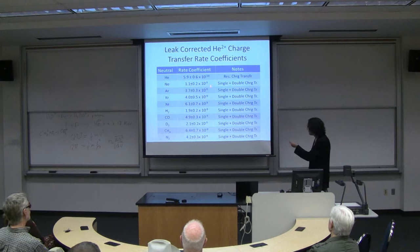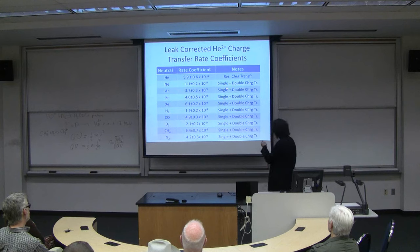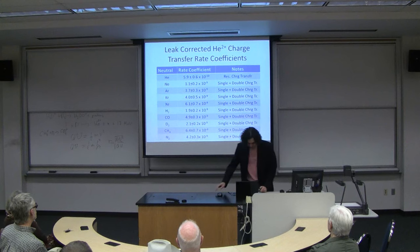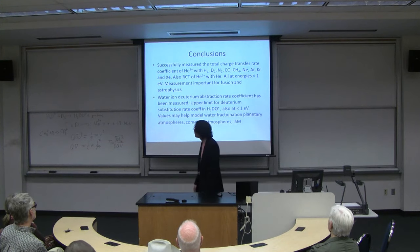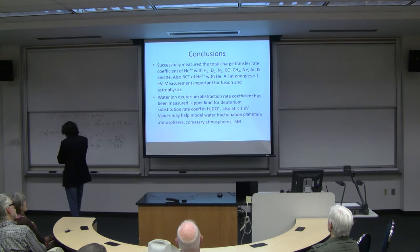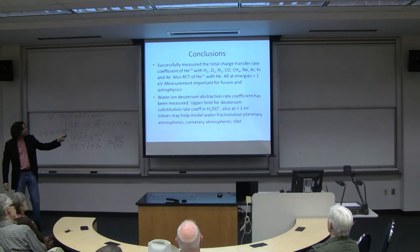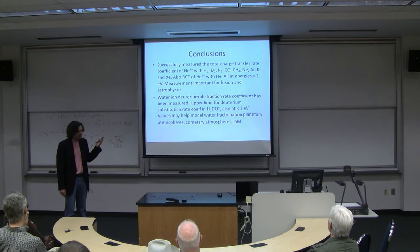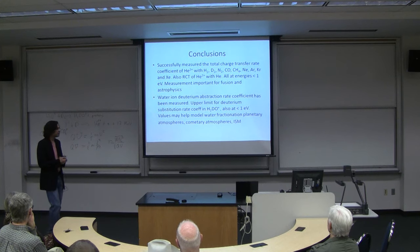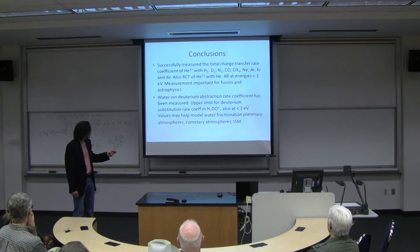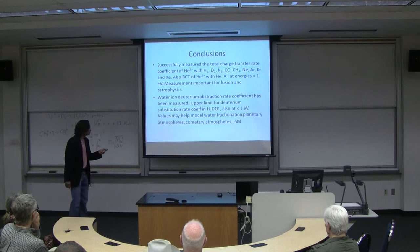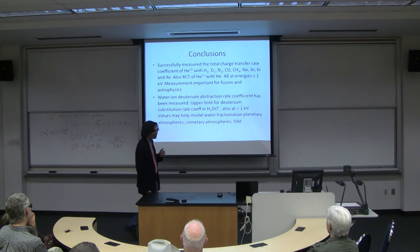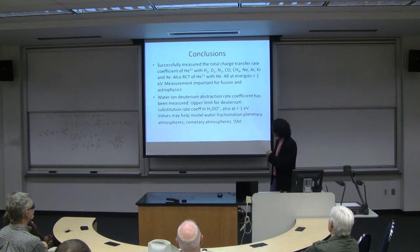Here are all the measurements: resonant charge transfer for helium with helium, and double-plus-single charge transfer for neon, argon, krypton, xenon, hydrogen, carbon monoxide, deuterium, methane, and nitrogen. In conclusion, I was able to measure the total charge transfer rate coefficients of doubly-charged helium with a number of neutrals, as well as the resonant charge transfer with itself, at energies under 1 eV — corresponding to about 1,200 to 2,400 Kelvin — an area with little prior data. I obtained the abstraction rate coefficient in water, important for planetary and cometary atmospheres. We were not able to obtain a definitive substitution rate coefficient, so we set an upper limit.